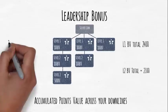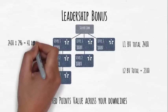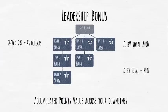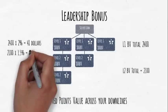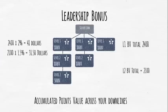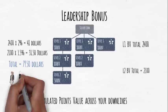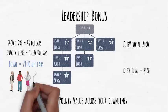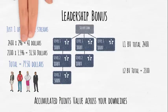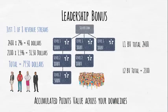Back to our example. As a Silver Lion, you would get 2,400 times 2% equals $48 plus 2,100 times 1.5% equals $31.50. In total, you would receive $79.50 leadership bonus for the month. And that's just for 4 people, and that's just 1 of 8 revenue streams. Imagine what you could receive if you had more people in your network.